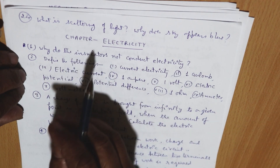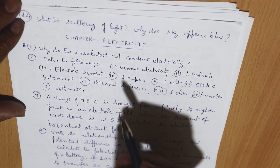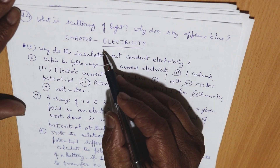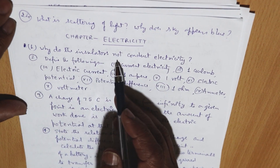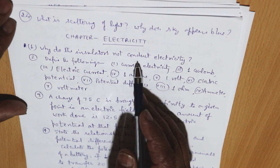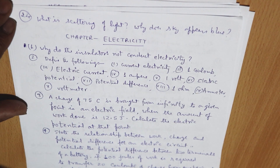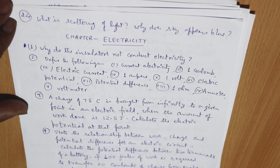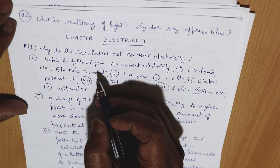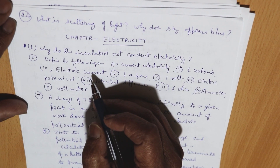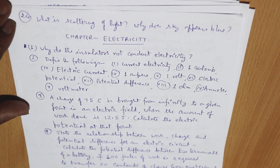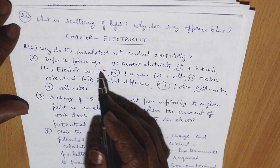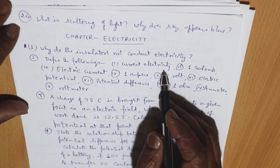Now moving to the chapter on Electricity: why do insulators not conduct electricity? We know there are insulators, conductors, and semiconductors. You have to write down the reason why insulators do not conduct electricity.